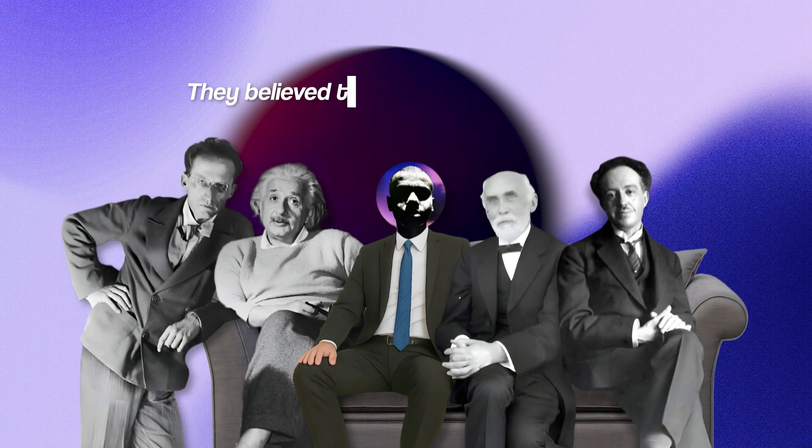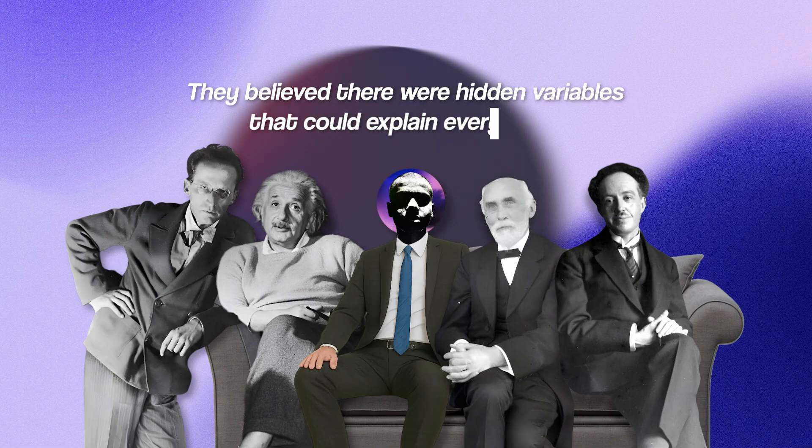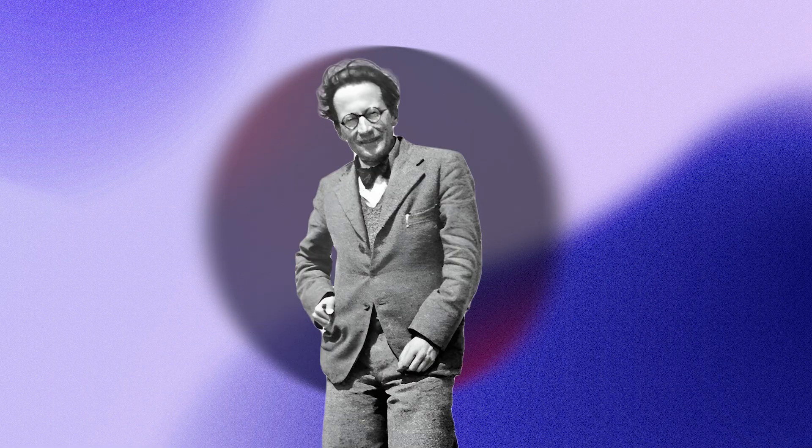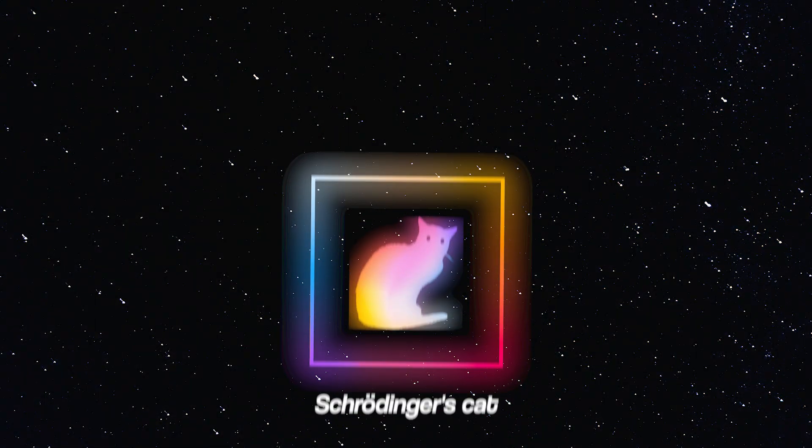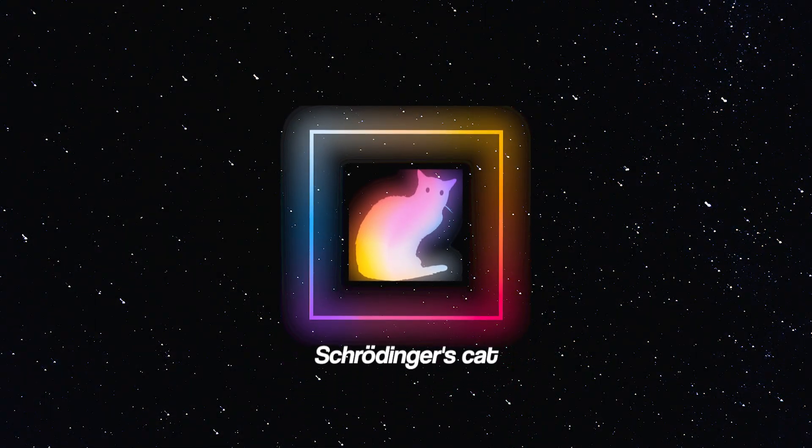And he wasn't alone. Physicists like Schrodinger, de Broglie, and Lorentz agreed. They believed there were hidden variables that could explain everything. Schrodinger, despite contributing heavily to quantum theory, never stopped trolling it. His infamous cat experiment was meant to mock the absurdity of superposition.